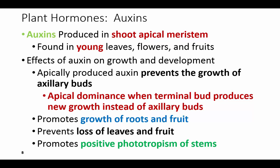First we're going to talk about auxins. These are produced in the shoot apical meristem and they promote apical dominance. They are found in young leaves, flowers, and fruit. They will prevent the growth of axillary buds, and apical dominance occurs when the terminal bud produces new growth instead of the axillary buds, so it's going to promote the growth of roots and fruit.